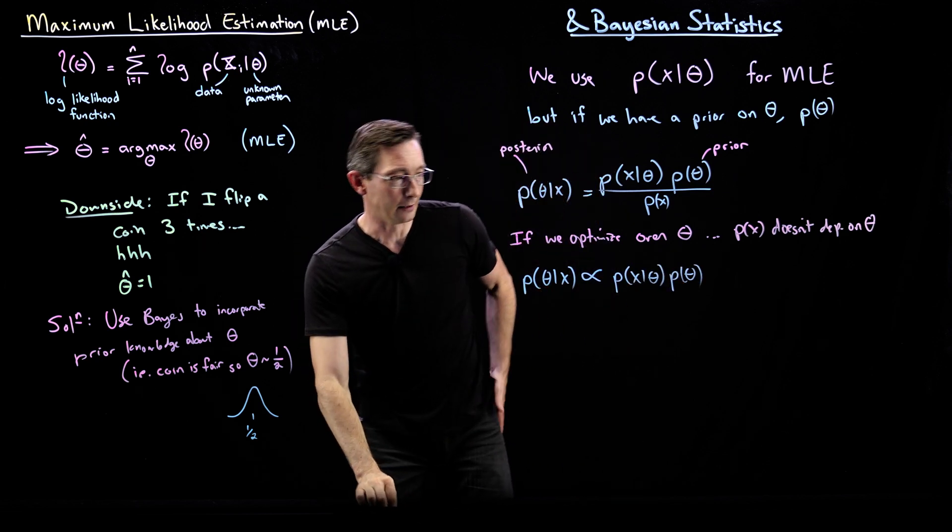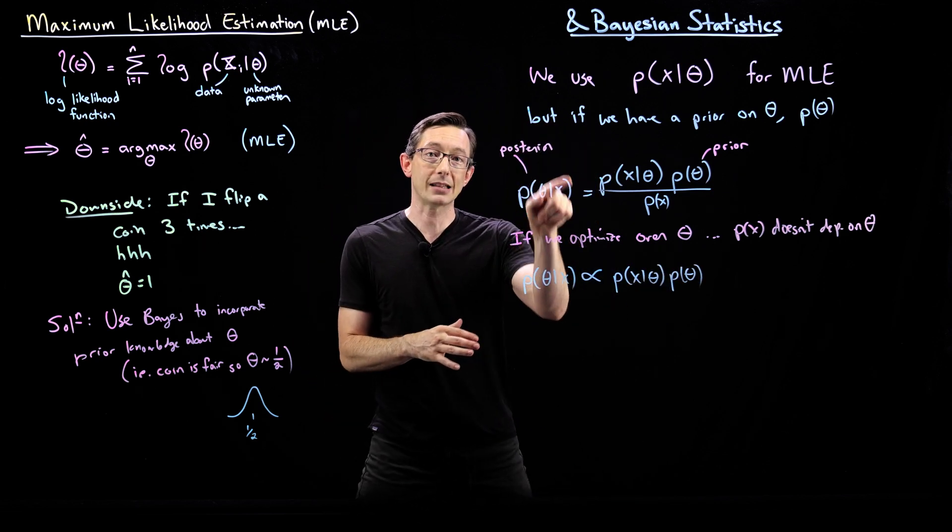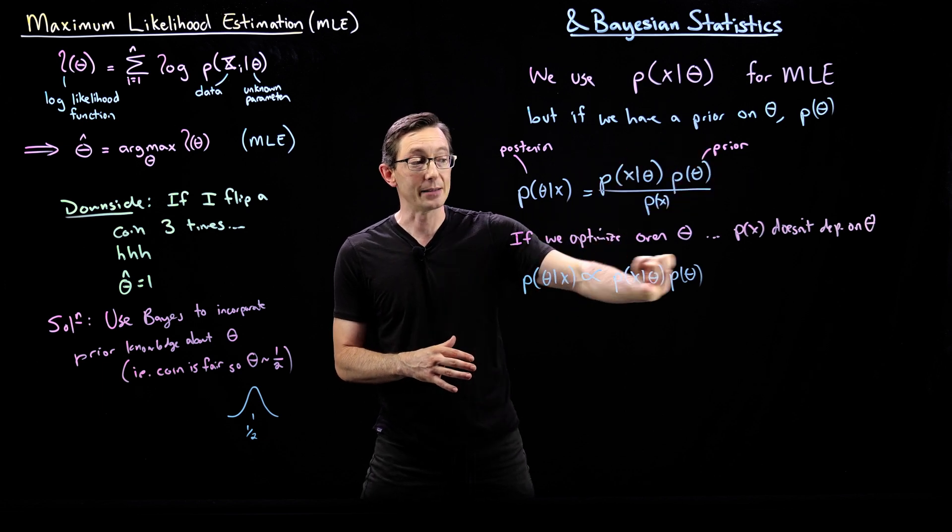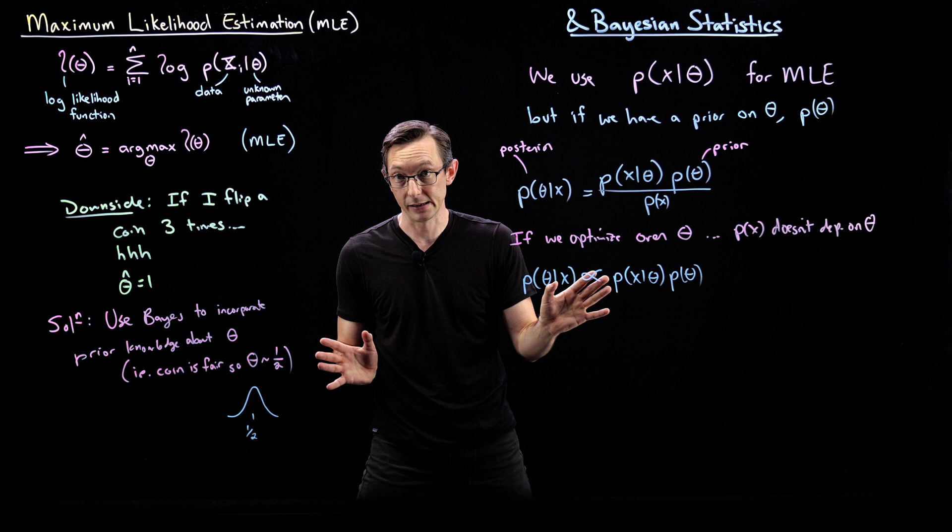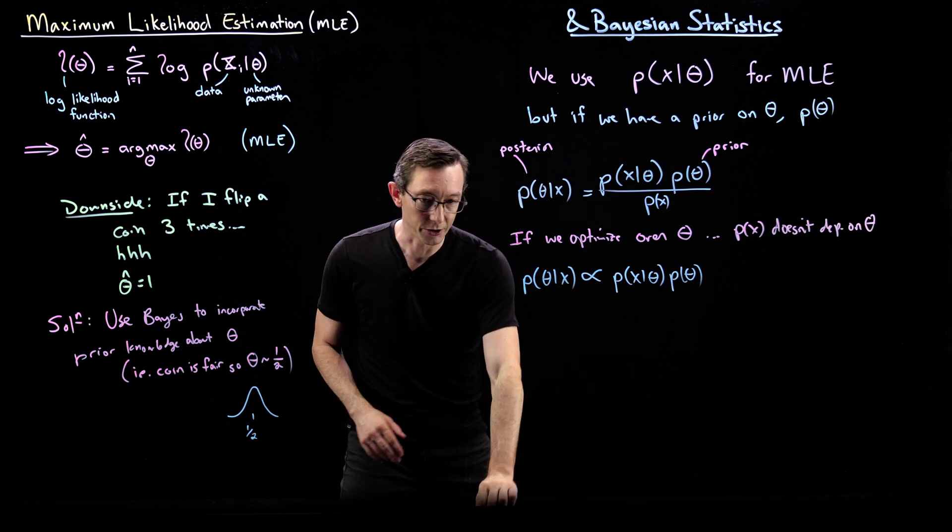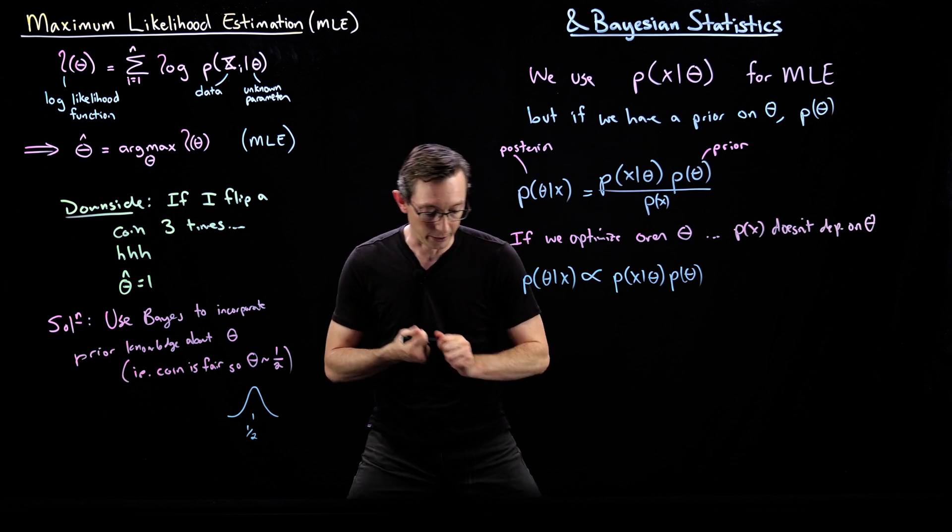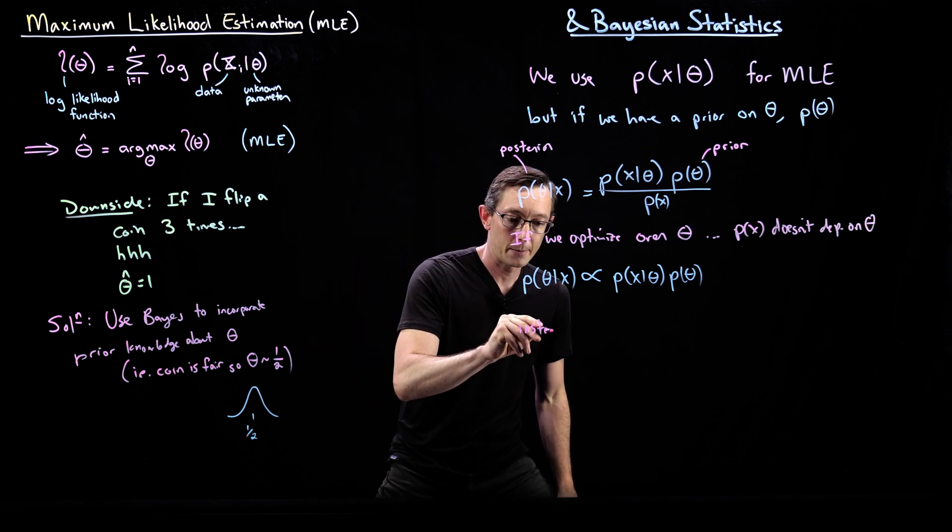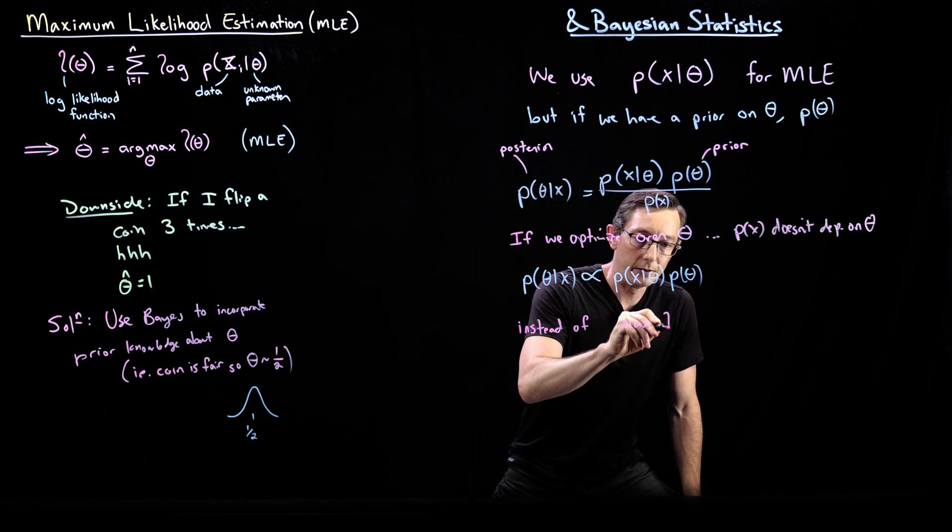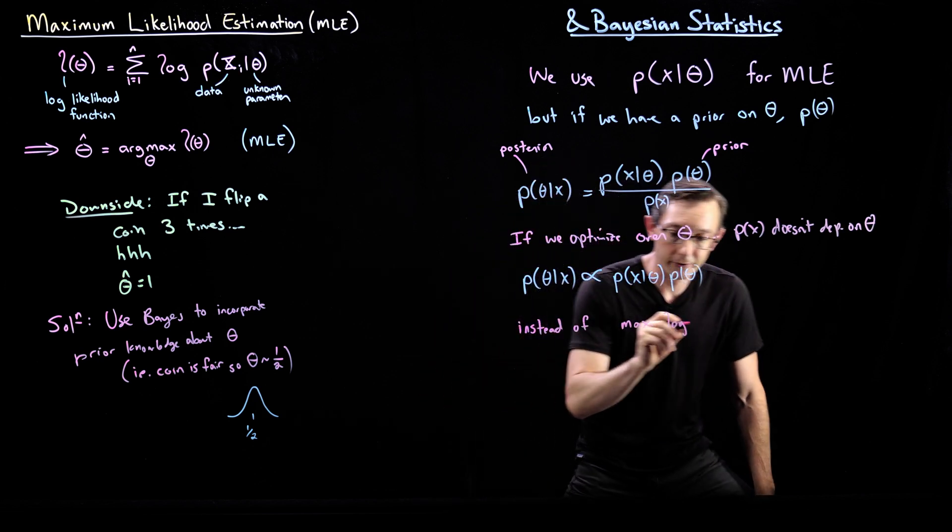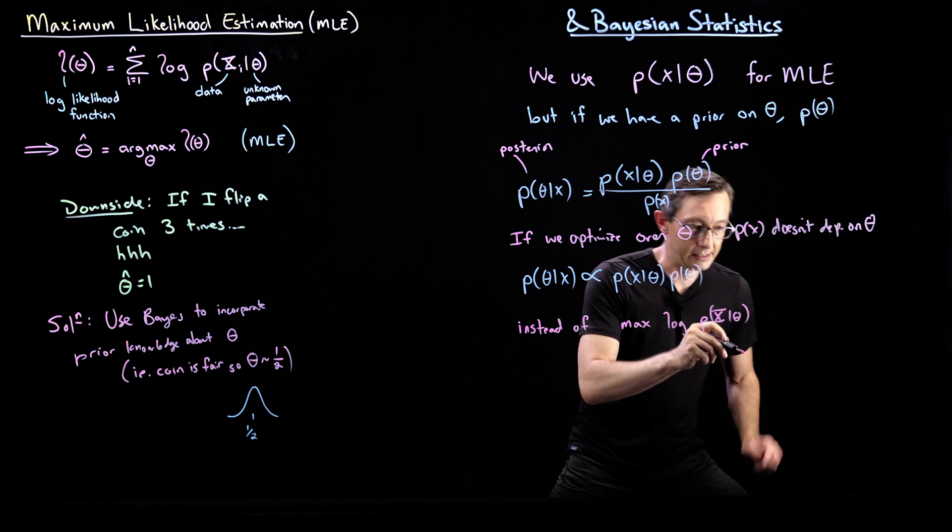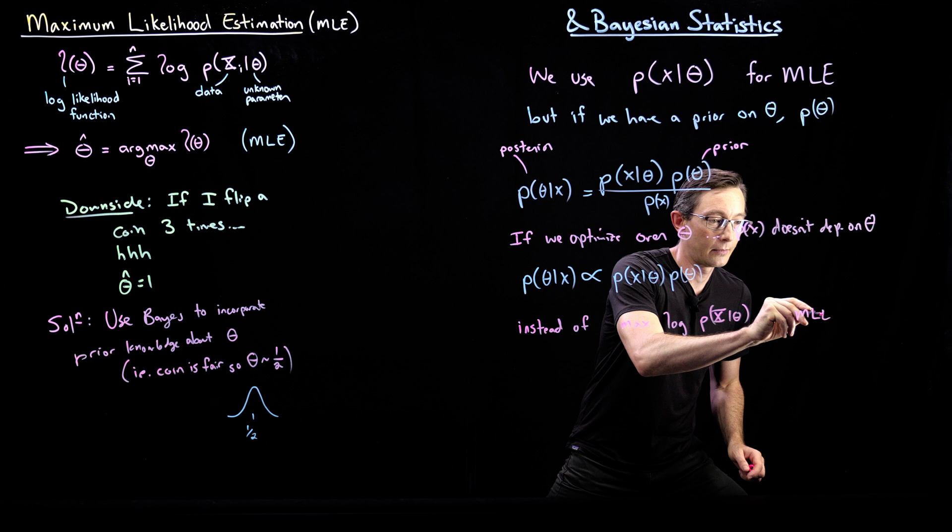So roughly speaking, if all I'm trying to do is find the theta that maximizes this quantity, instead of maximizing this, I can maximize this. And I will get the theta that maximizes this. That's really, really useful. So essentially, I'll just write this out so that it's really clear. So instead of doing the max of the log of P(x|θ), this is the MLE.